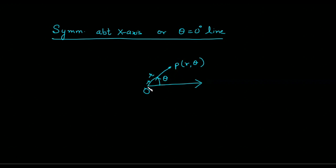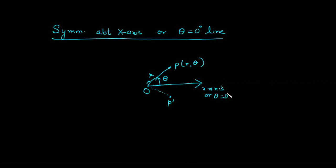So if, corresponding to this P, point P' also satisfies the graph, then we will say the graph is symmetrical about this line — the x-axis, or the theta equals zero degree line.